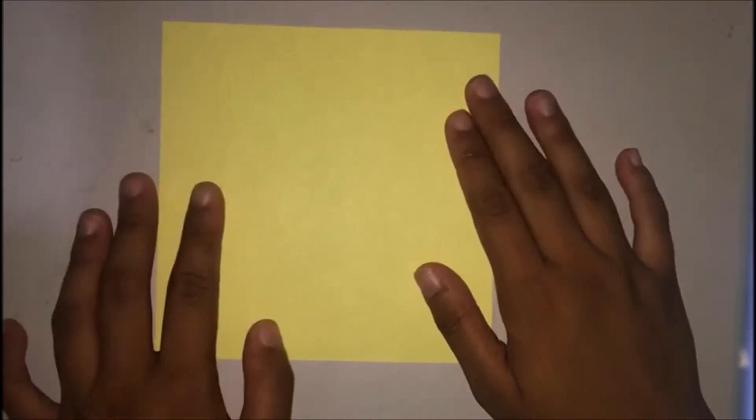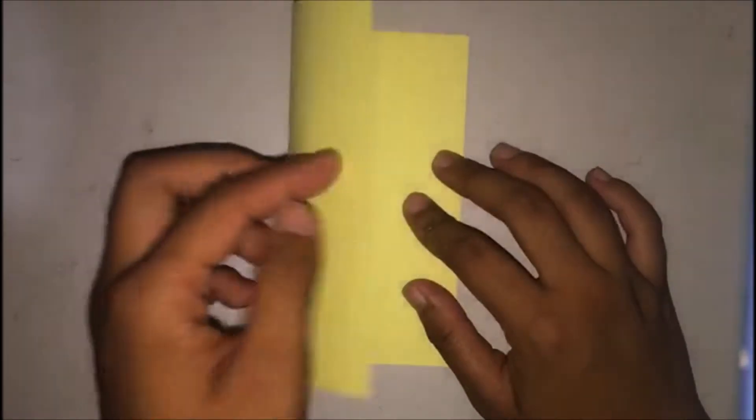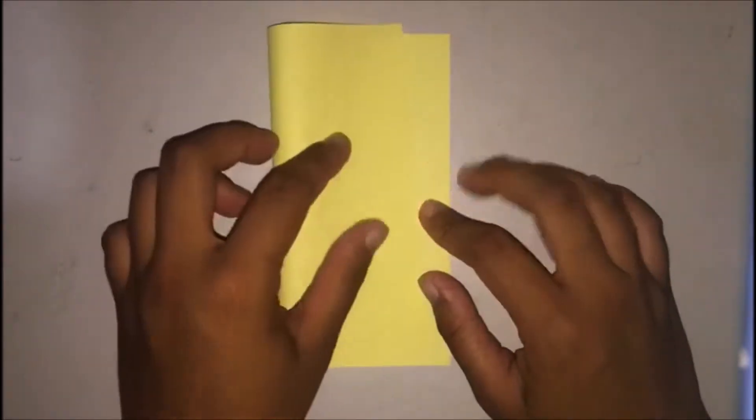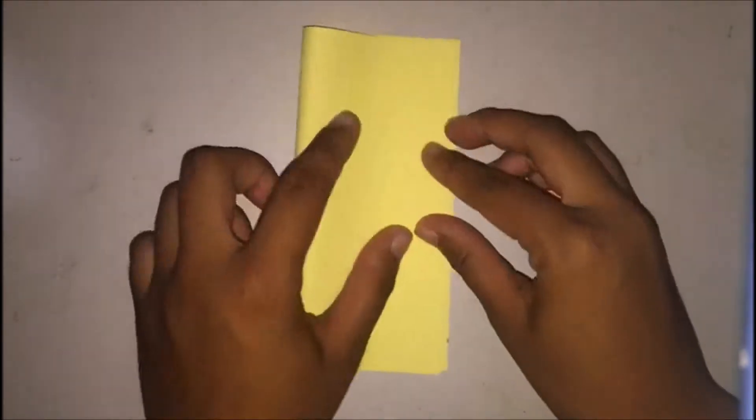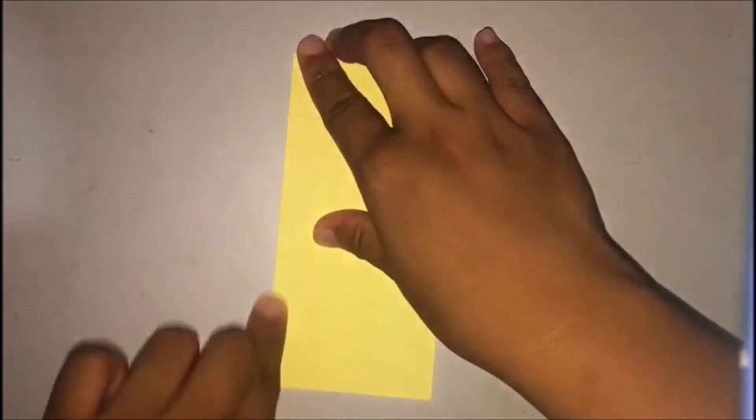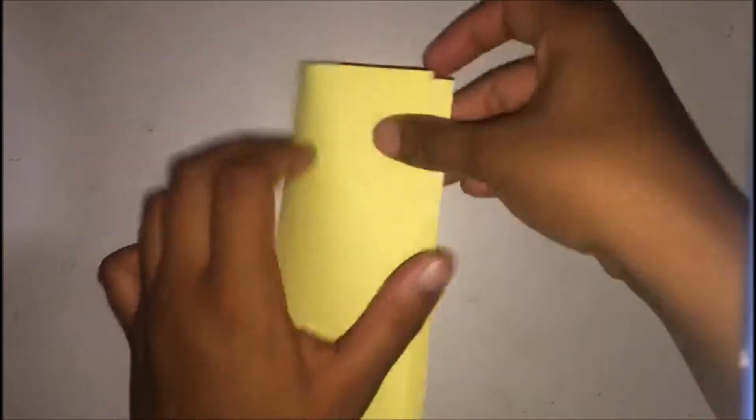The first step to making a crane is to fold each side in half. So I'm going to fold this in half. Make sure you really fold it well so you can get those creases. Now open it up again and fold it in half.